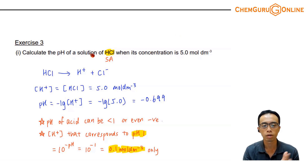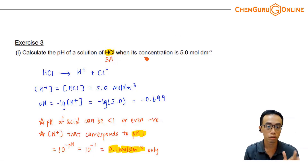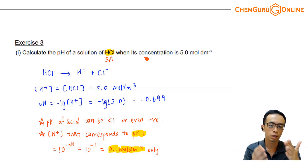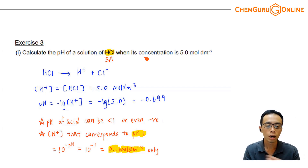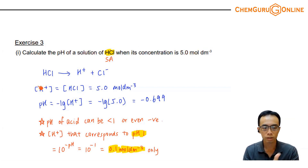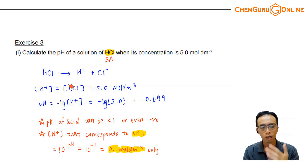For exercise 3, I want to calculate the pH of a solution of a strong acid. Strong acid calculation is very simple. Because a strong acid is fully dissociated, the H⁺ concentration is equal to the acid concentration. So I can calculate the H⁺ concentration. Since the concentration for the acid is 5 mol per dm³, H⁺ also equals 5 mol per dm³.